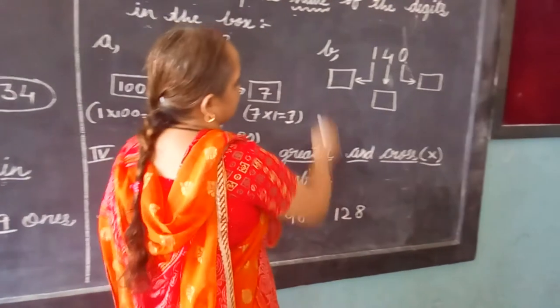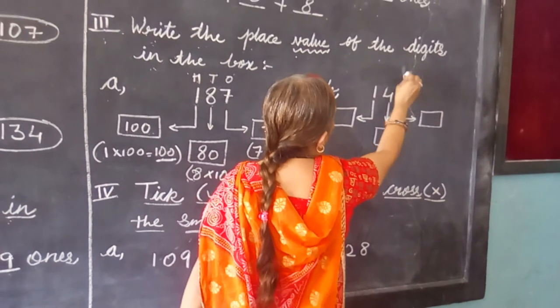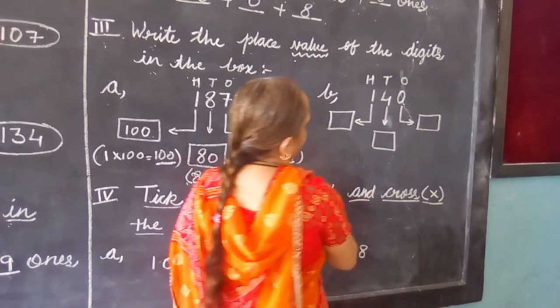Now in the next B position, 140 number is given. So we are going to write here 1, 4, and 0.